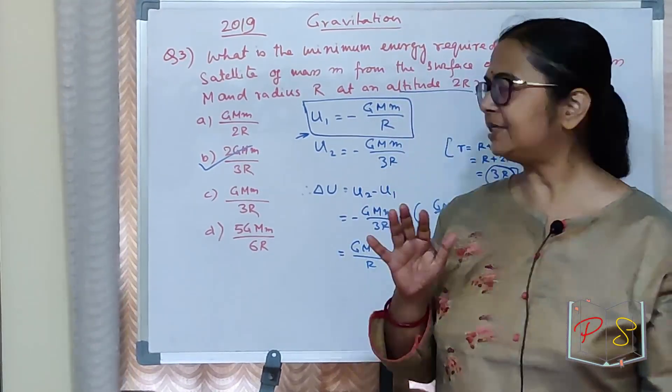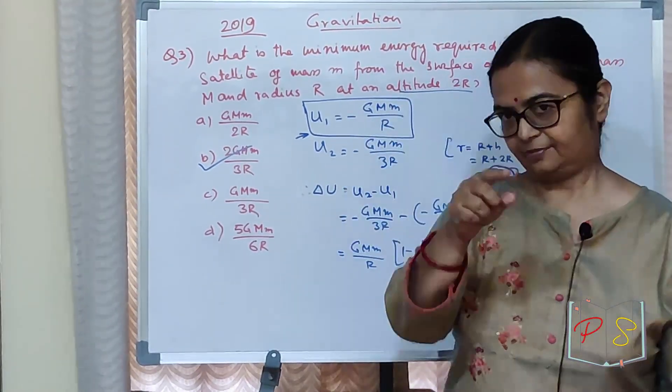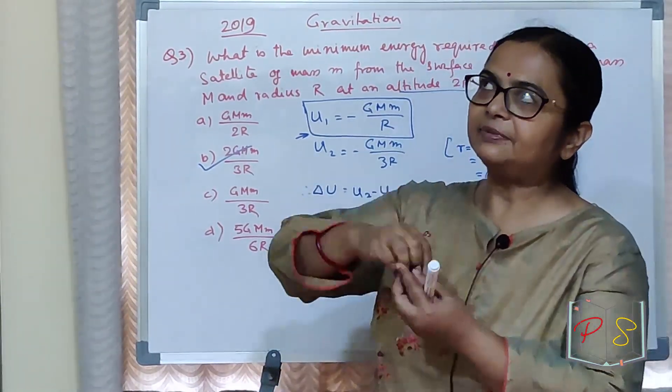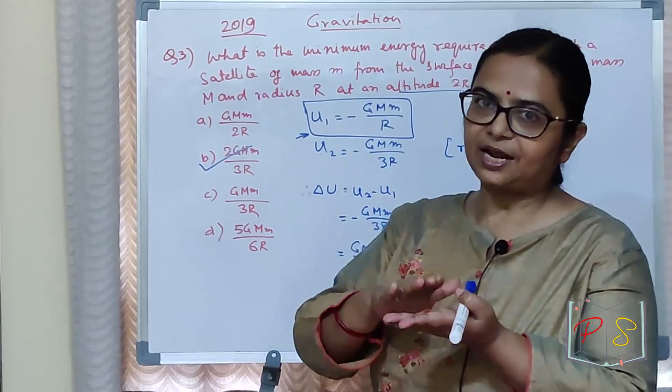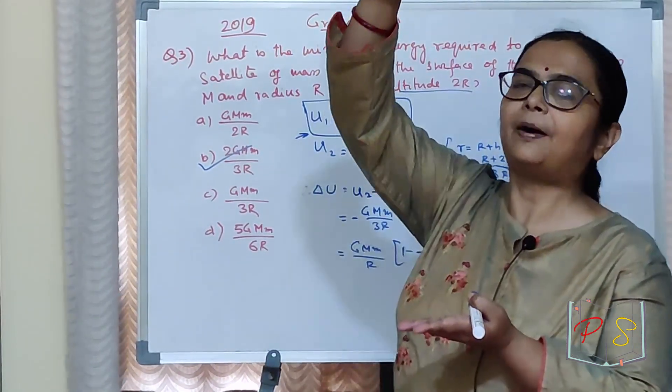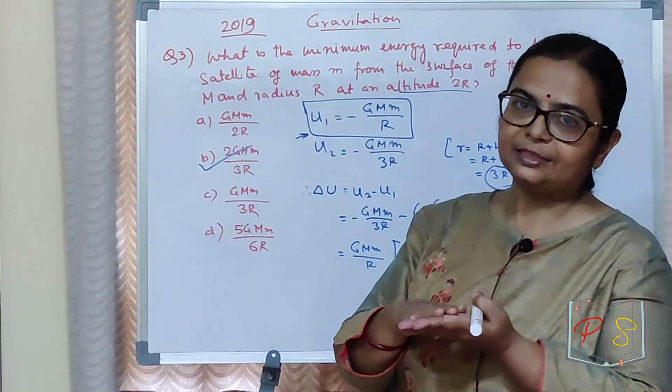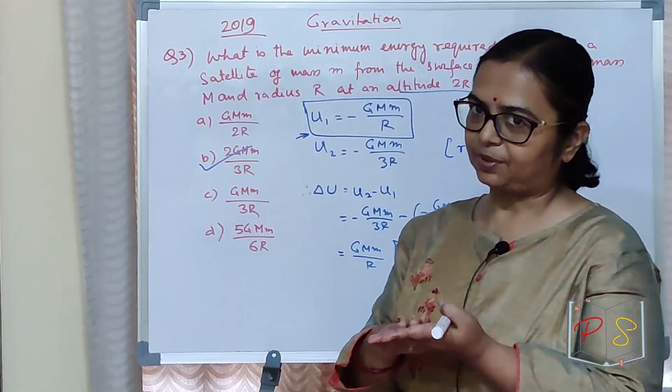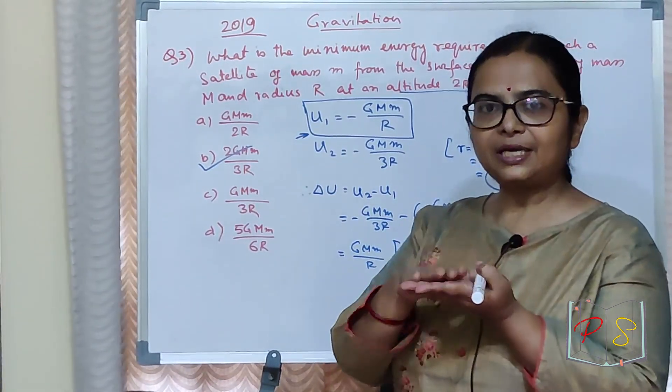Surface mein potential energy is this. Kyu ki, jab aap MGH karte ho, idhar potential energy 0 banate ho. That is a reference potential energy. Idhar se to aap leke jaate ho, 0 potential. Difference of potential energy aap karte ho.